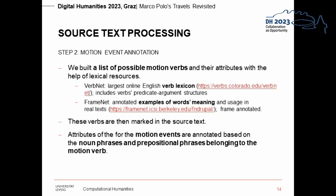VerbNet is the largest English verb lexicon, which includes a verb's predicate argument structures. Additionally, FrameNet annotates examples of words' meaning and usage in real texts. WordNet is also used to collect synonyms for the dictionary-based identification process. The parser's output is then utilized to determine if Marco Polo is the subject of the motion verb, disregarding other characters in the book. Moreover, it helps to classify if the location argument of the motion verb falls within Marco Polo's route by identifying the subject of the motion verb.